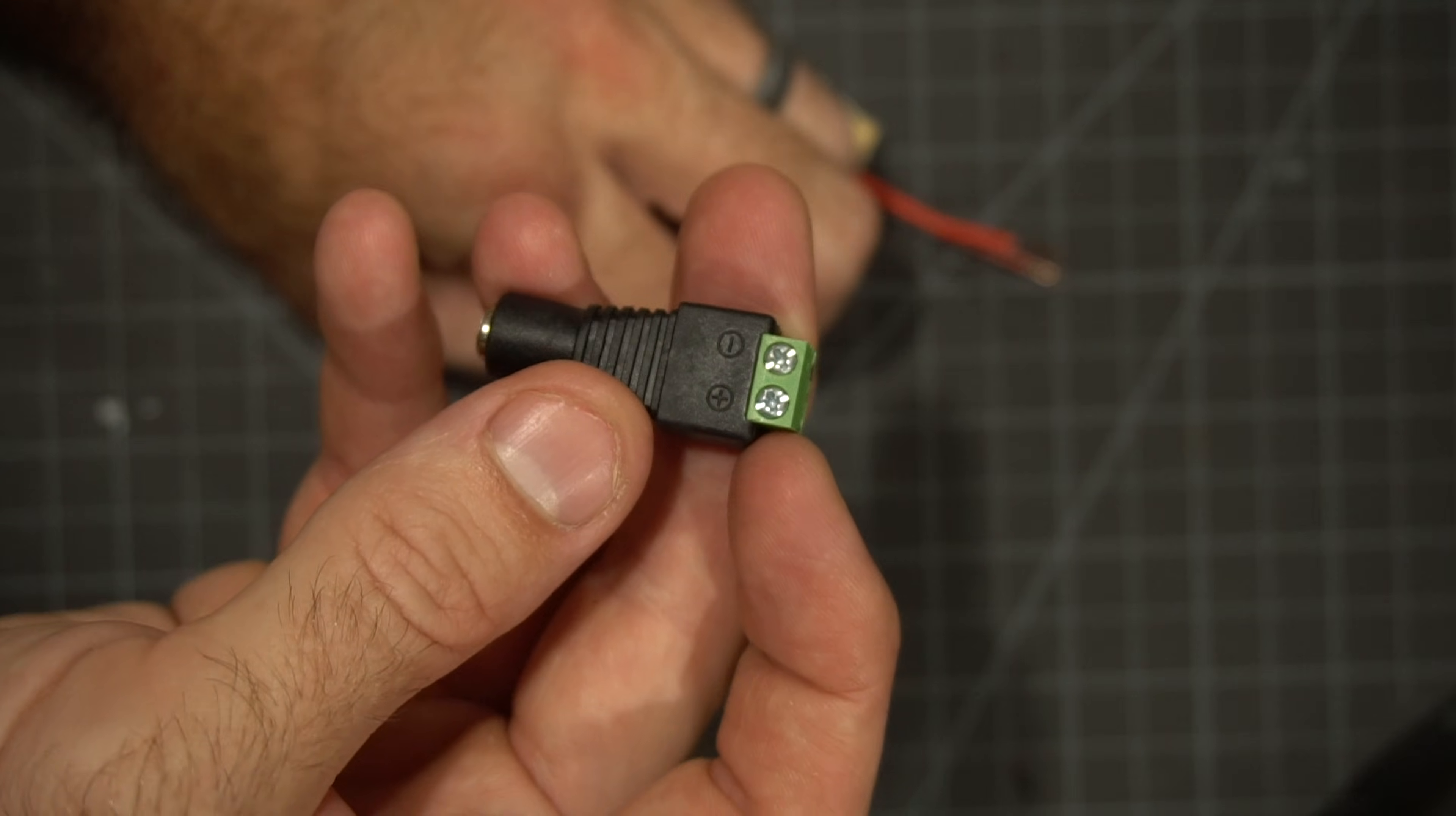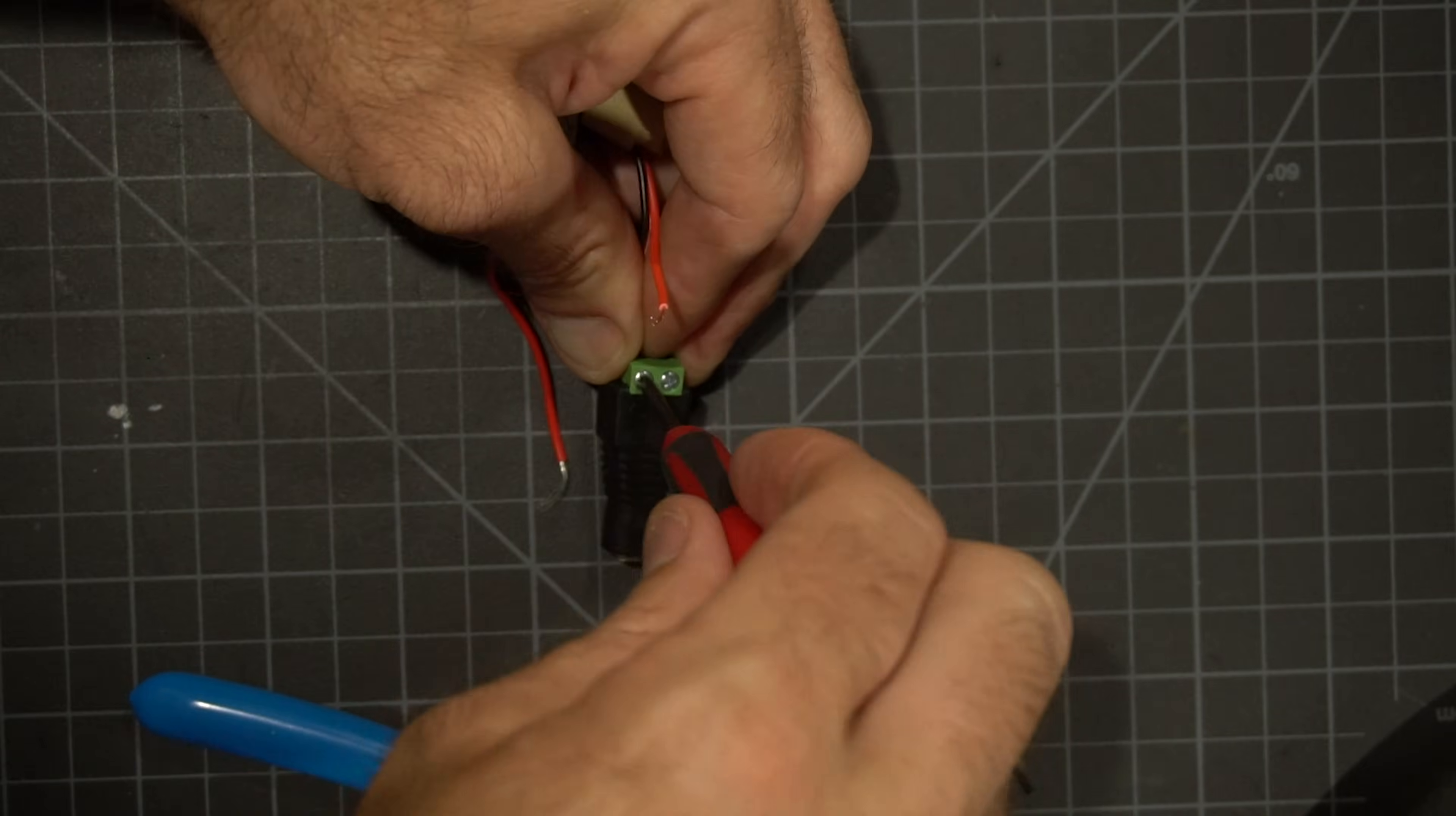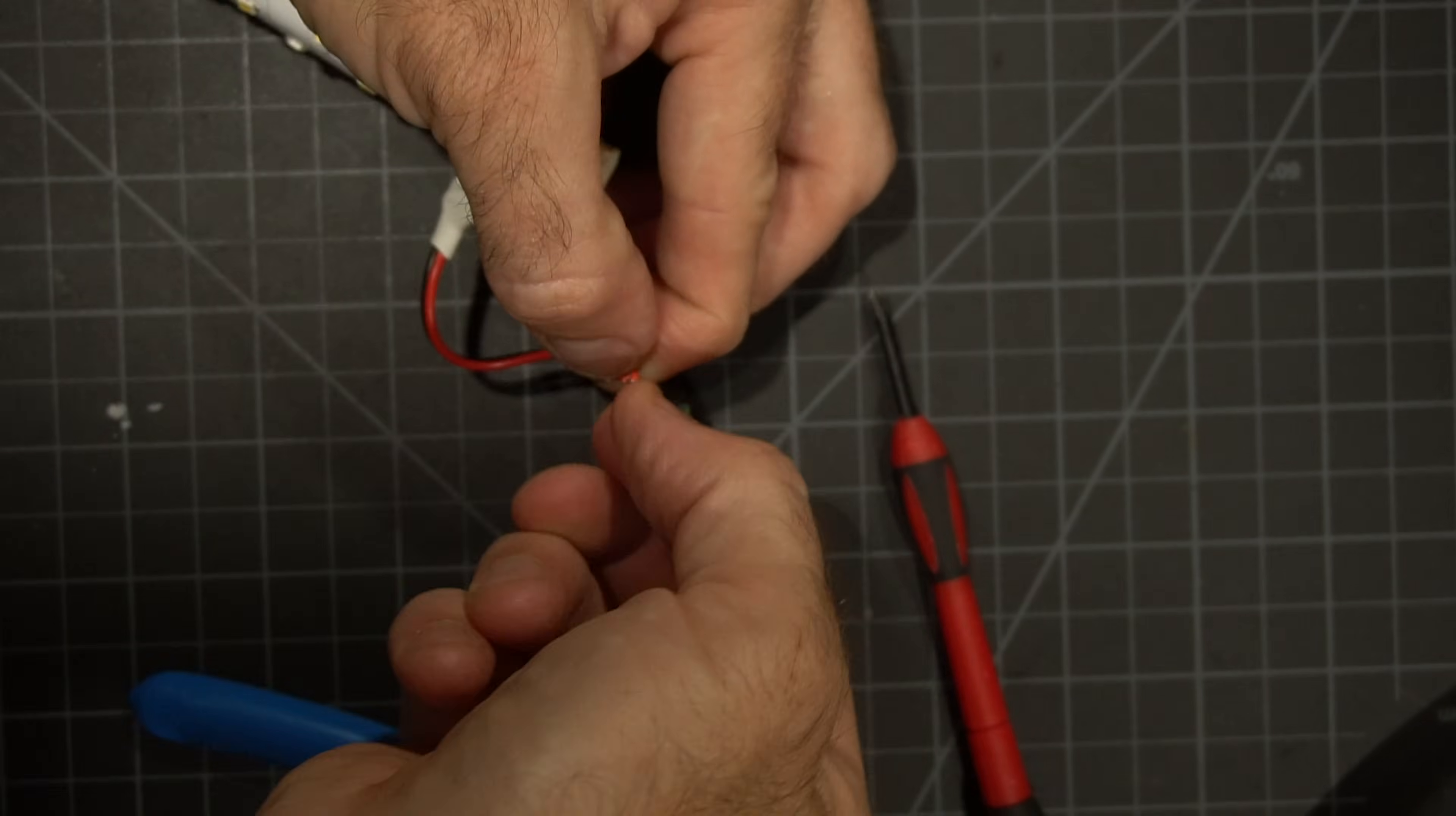Make sure your solderless power adapter is nearby. Twist the two bare black or negative wires together and then slip those into the negative side of the power adapter and screw them down. Simply repeat this step with the two bare red or positive wires.